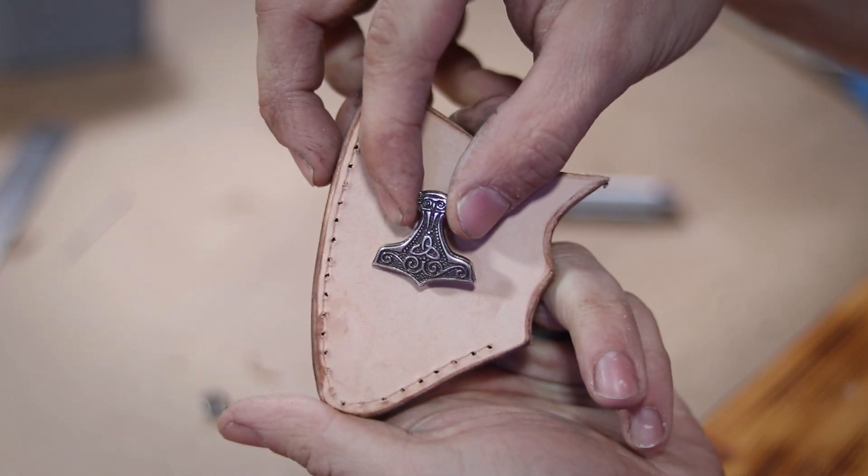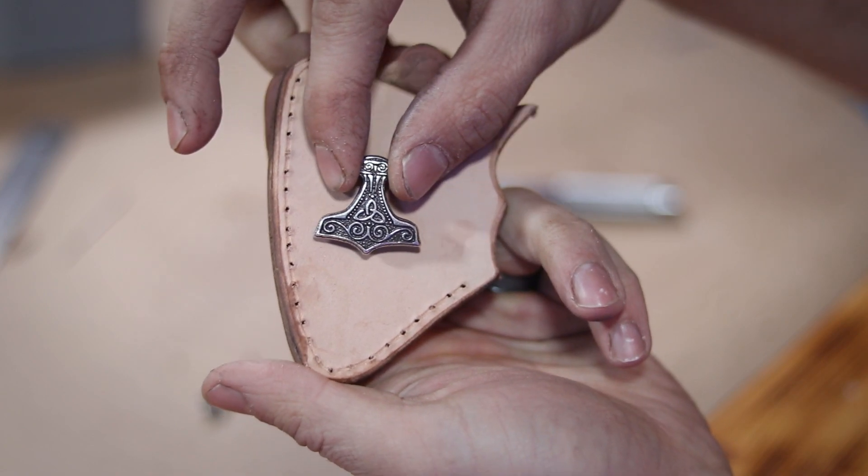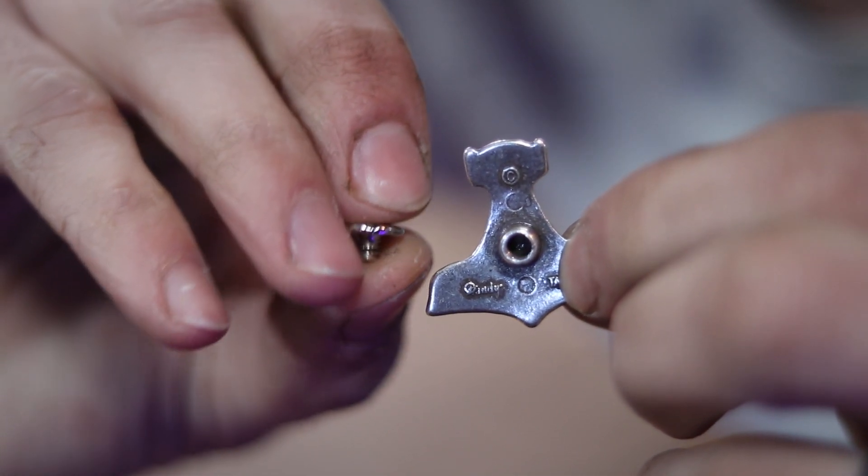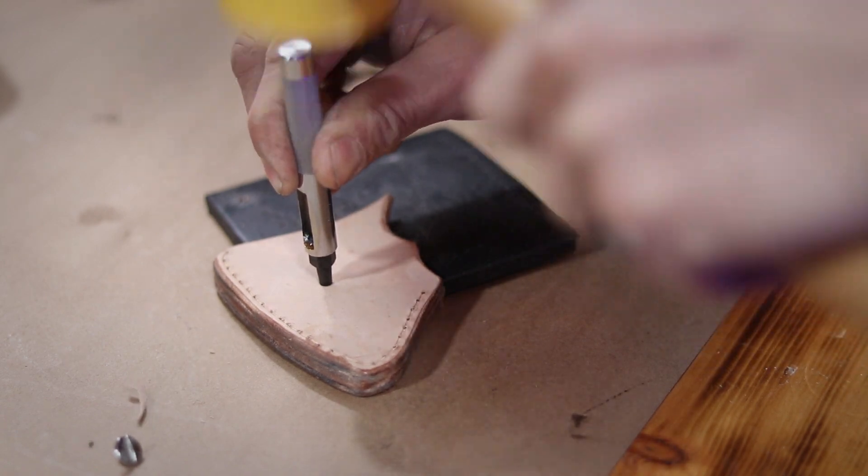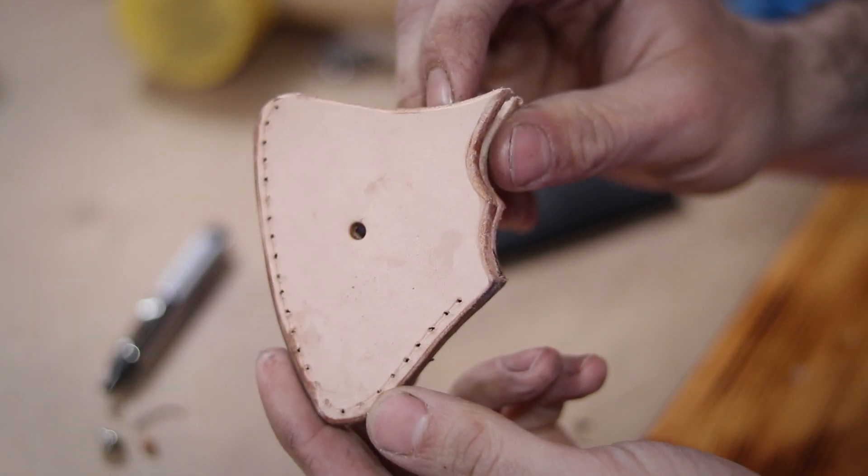Now I've decided to use this Mjolnir shaped concho as part of my closure assembly. A concho is kind of like a pin, but with a little screw in the back that holds it in place. So I punch a hole in the center of my front plate large enough for the screw to come through.